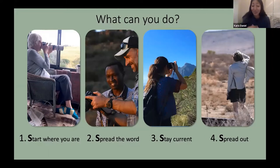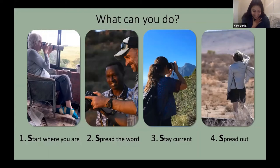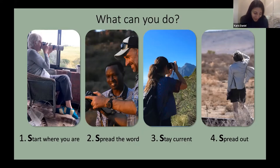Fourth S: spread out — try to visit grid cells with little or no coverage, as data for those regions makes a real difference in model prediction accuracy. I realize this isn't an option for most of us right now, but every record you contribute is valuable regardless of where it's from. So your four S's: start where you are, spread the word, stay current, and spread out. Thank you all so much for your contributions, and I hope to see many more from you in the future.